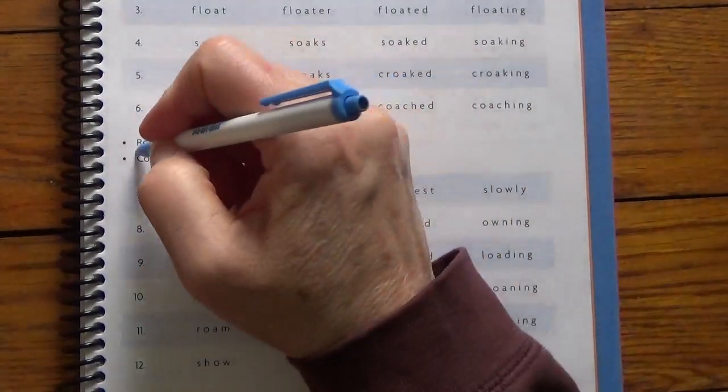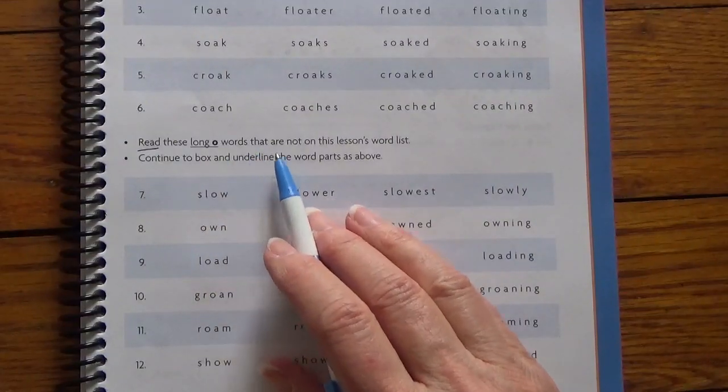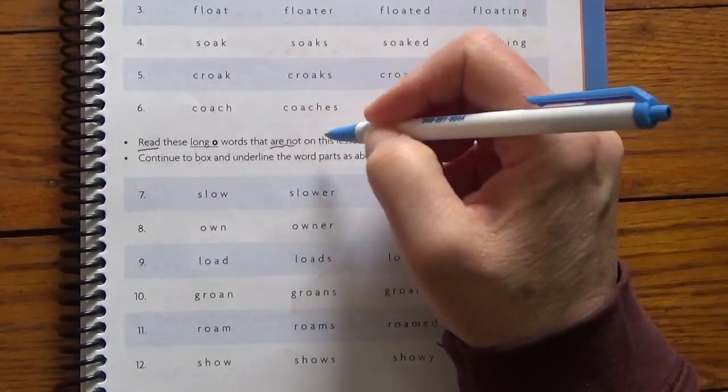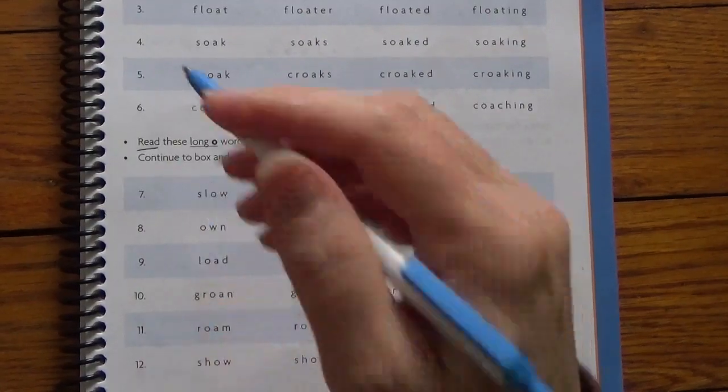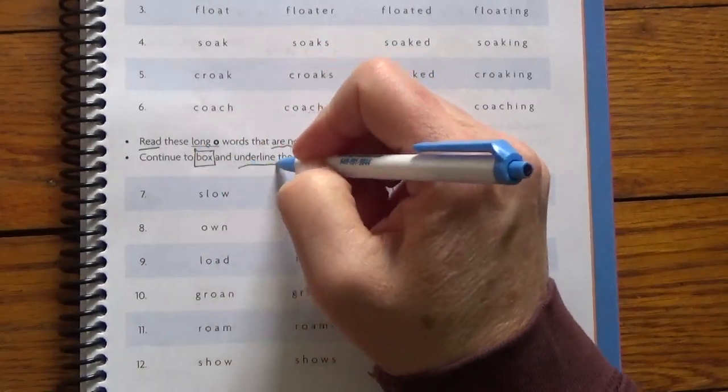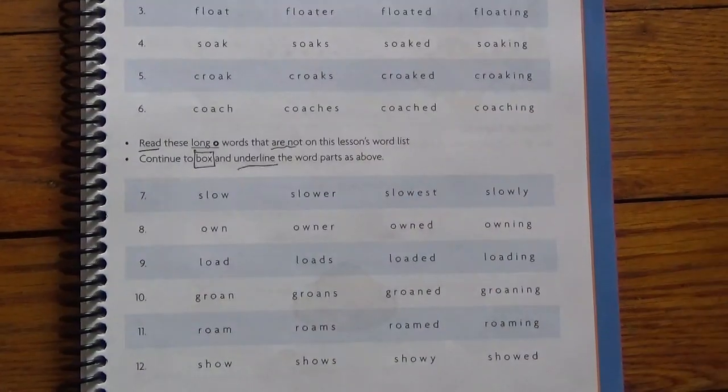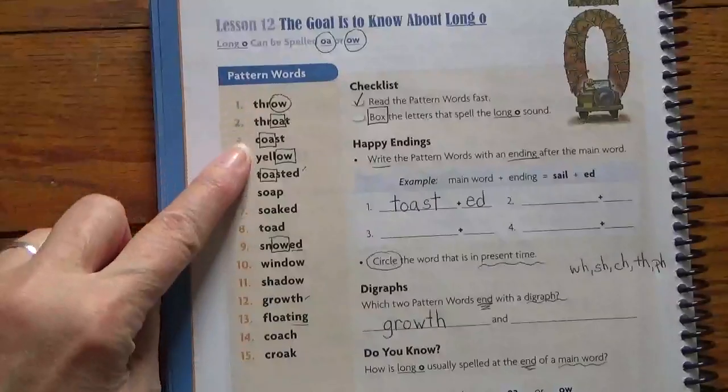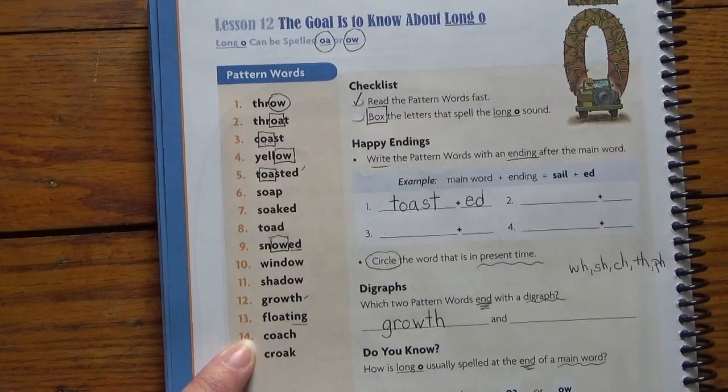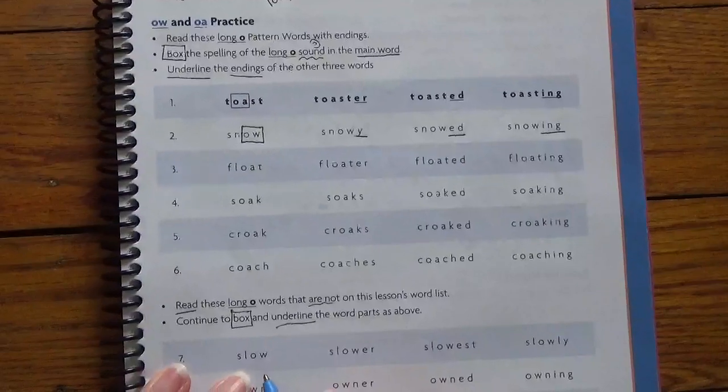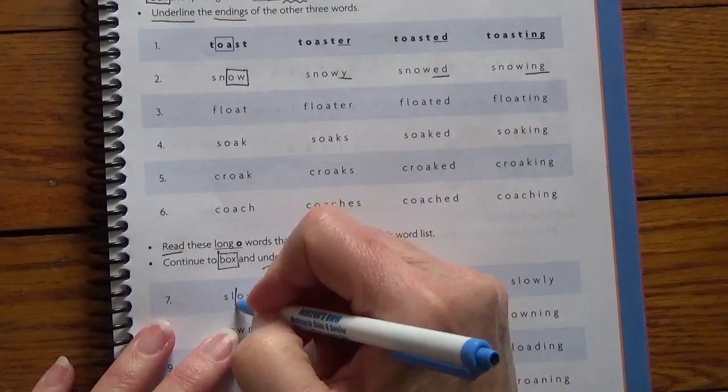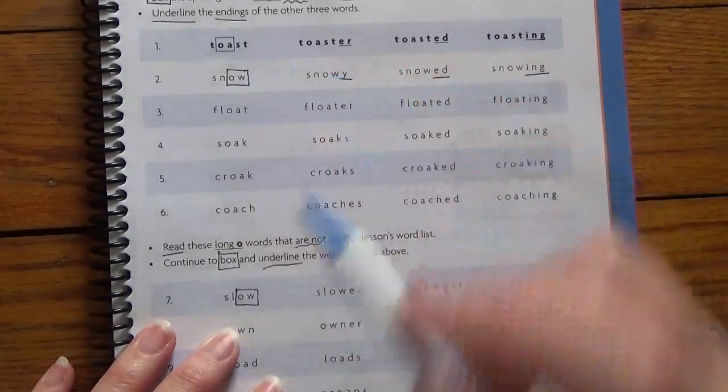Read these long O words that are not on this lesson's word list. So they're not part of our lessons, but they follow the pattern. Continue to box and underline the word parts just like we did up here. So slow. We look here. Slow is not one of our pattern words, but it follows the pattern. So I'm going to box in the O-W just like I did up here.